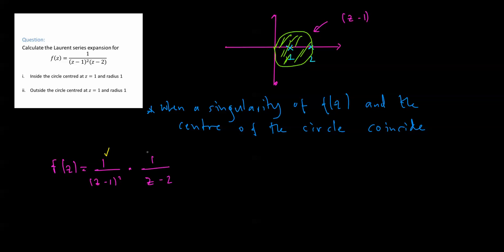But this bit we're going to have to do something about. The question is: do we need to find a Taylor series or a Laurent series? Since we're finding it inside the circle, and the singularity is on the boundary, we're going to need a Taylor series. If it was outside the circle — which we'll look at in scenario 2 — we're going to have to find a Laurent series expansion.